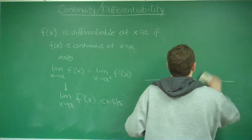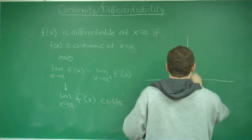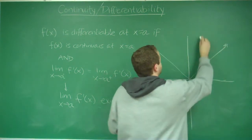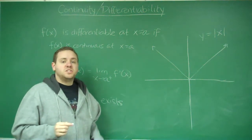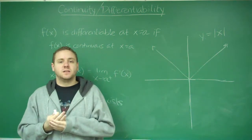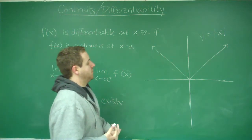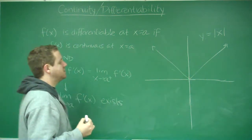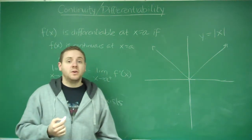The easiest example of this is a function you're probably very familiar with: y equals the absolute value of x. This function is definitely continuous because at any given point, the function exists and it has the same limits from both sides. Let's check if this function is differentiable. The only place where we might have a problem is right at the point. Is f(x) continuous at x equals 0? Yes, it is.